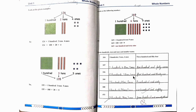Then two sixty: two hundred, six tenths, zero ones — two hundred and sixty. Next: six eighty — six hundred, eight tenths, zero ones — six hundred and eighty. Next: four seventy three — four hundred, seven tenths, three ones — four hundred and seventy three.